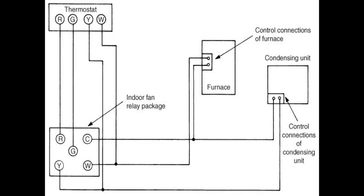The W terminal gets connected to your control connections of the furnace, and the Y goes to your condensing unit. All commons come back to the C terminal.